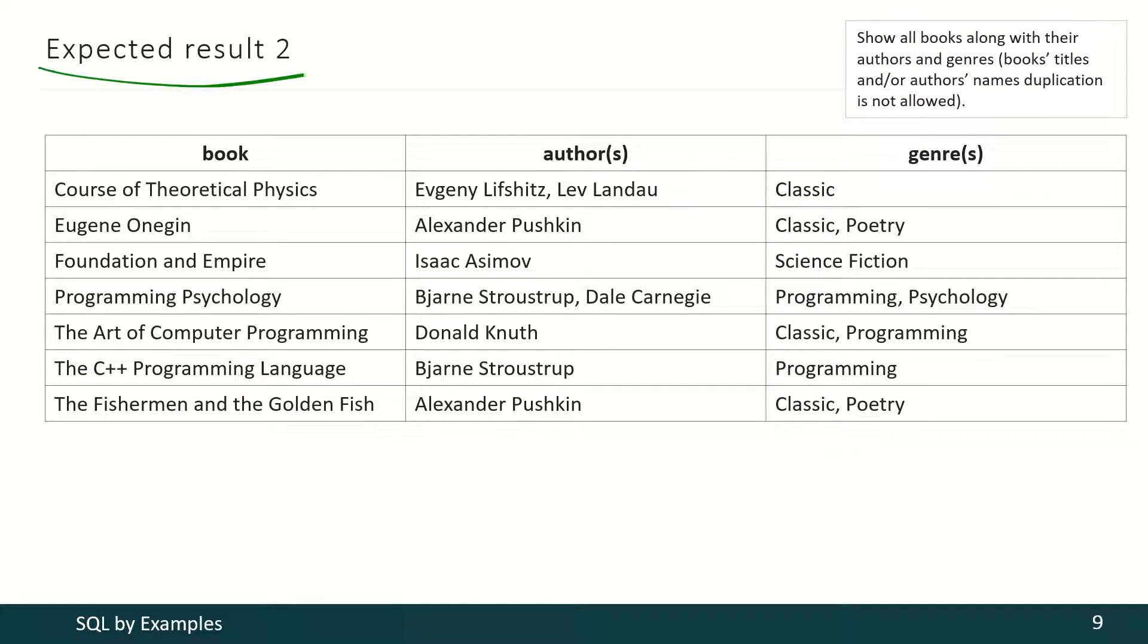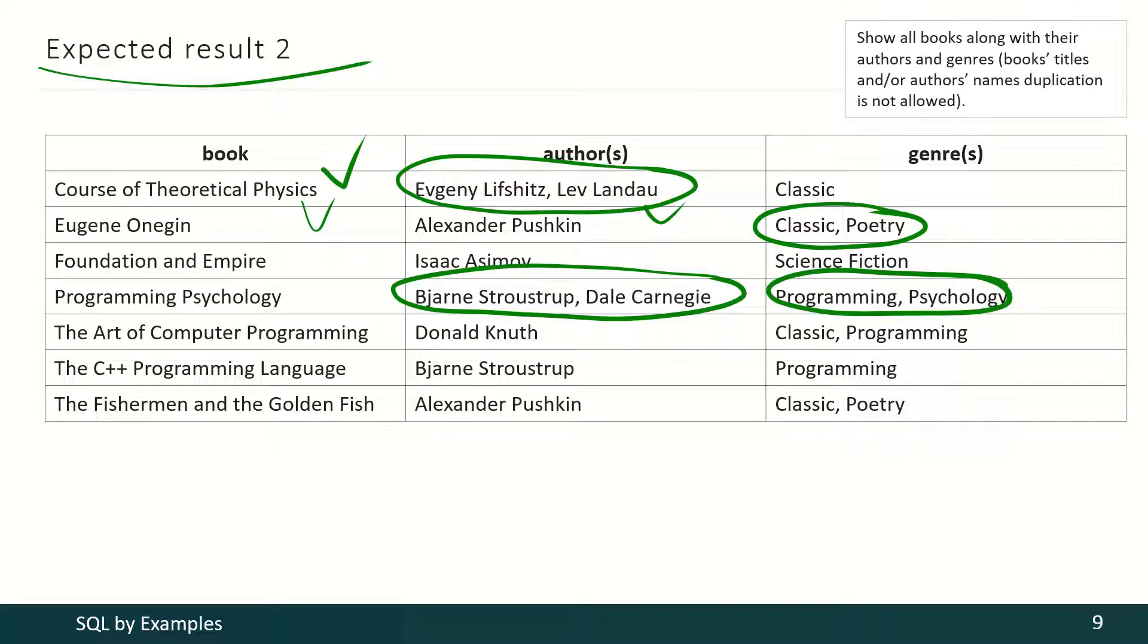So this is the expected result. You see that this book has two authors, but no duplication here. This book has two genres, but also no duplication here. And this book has two authors and two genres. And once again it's just only one single row of a table.